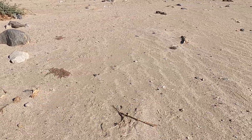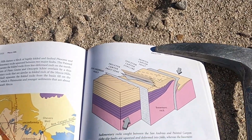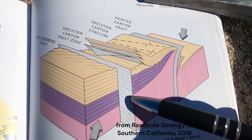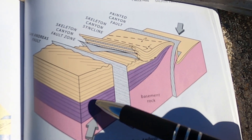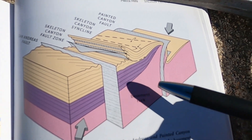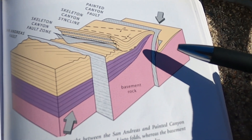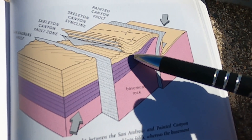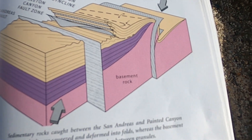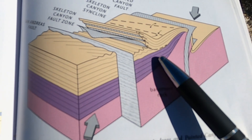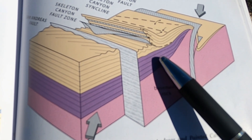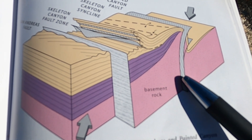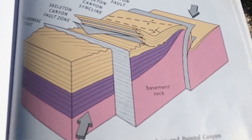Let's start with a diagram from the Roadside Geology of Southern California book. This block diagram shows the San Andreas Fault with the west side shifting to the northwest, and then there's another fault further up the canyon called the Painted Canyon Fault. In between these two faults the rocks are being compressed slightly — the plate boundary is a little oblique to the plate motion, which produces some of the folding we'll see here in the Mecca Hills and Box Canyon.